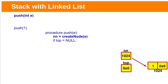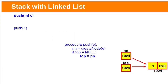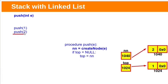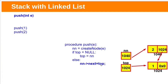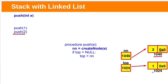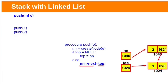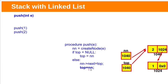Initially, the global variable top will be null, meaning the stack is empty. If top is null, make the new node the top by copying the new node's address into the top pointer. For the second push, a new node is created at address 1040. Since top is not null, place top into the new node's next field — copy address 1024 into new node's next. Now the new node points to the previous top. Then update top to point to this newly created node.